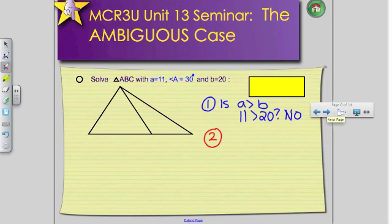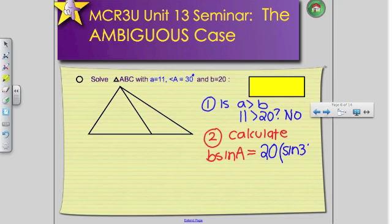So step 2 is to calculate B sine A. All of these steps need to be present when you're doing your unit work and when you're doing your test. So I know that side length B is 20 and sine A is just sine of 30 degrees. Remember to make sure your calculator is in degree mode, and when you punch this into your calculator, you're going to get a value of 10.